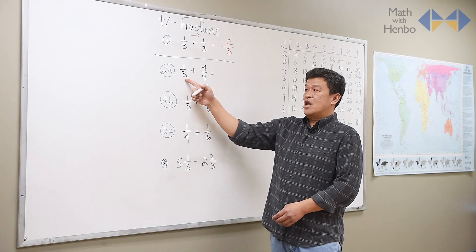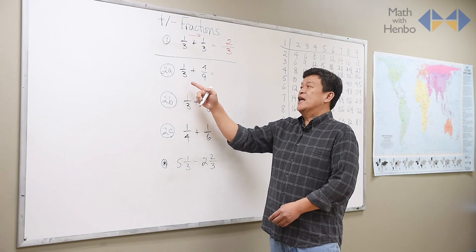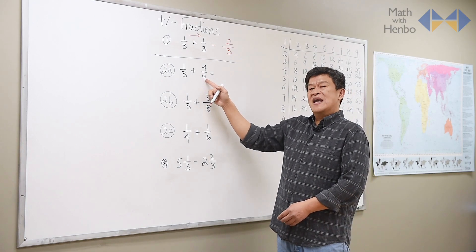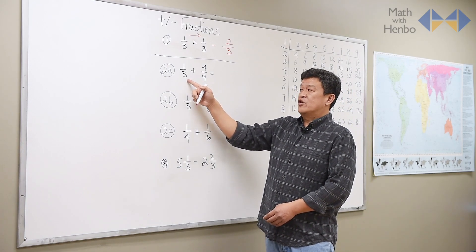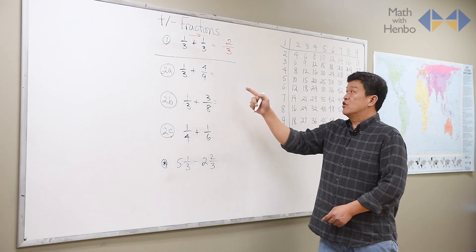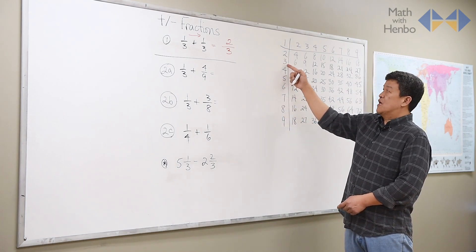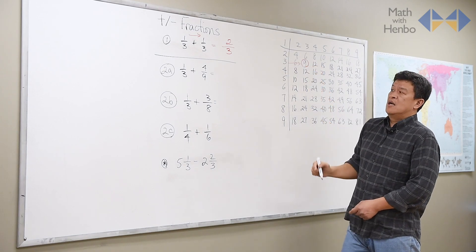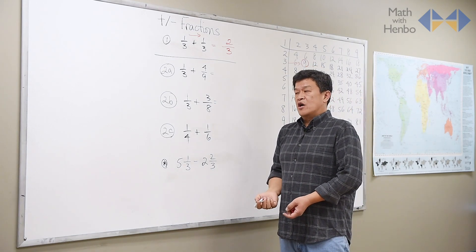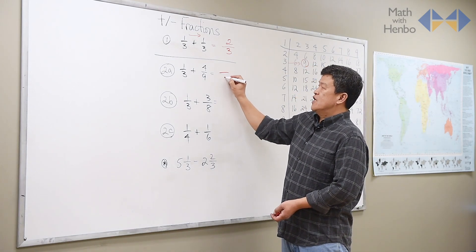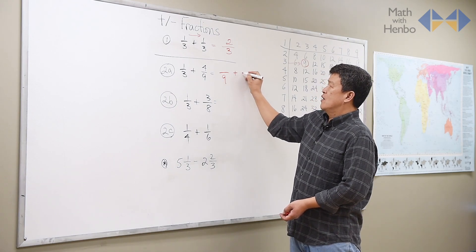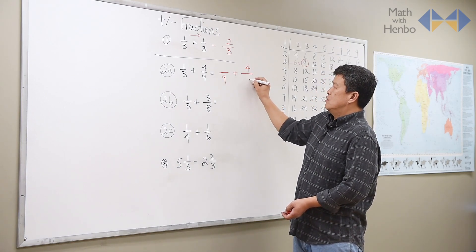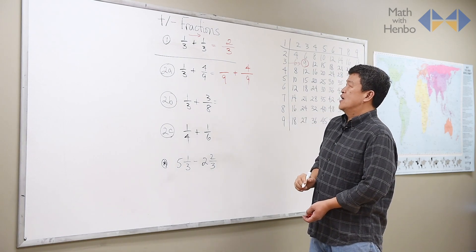Always check to see if the smaller bottom number can become the bigger bottom number. In this case, all I have to do is use the times table. Go into the 3 and see if a 3 can become a 9, and there it is. 3 does become a 9. So how does that work? All we need to do is change the third to the ninth and leave the original ninth here, 4 over 9, as is.